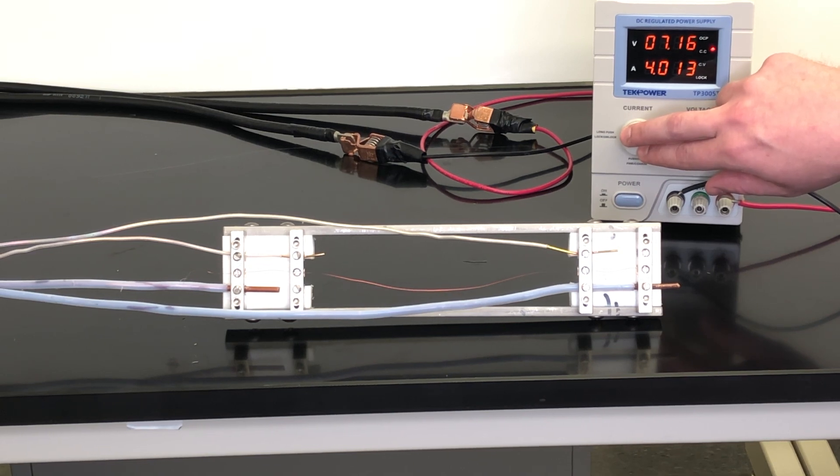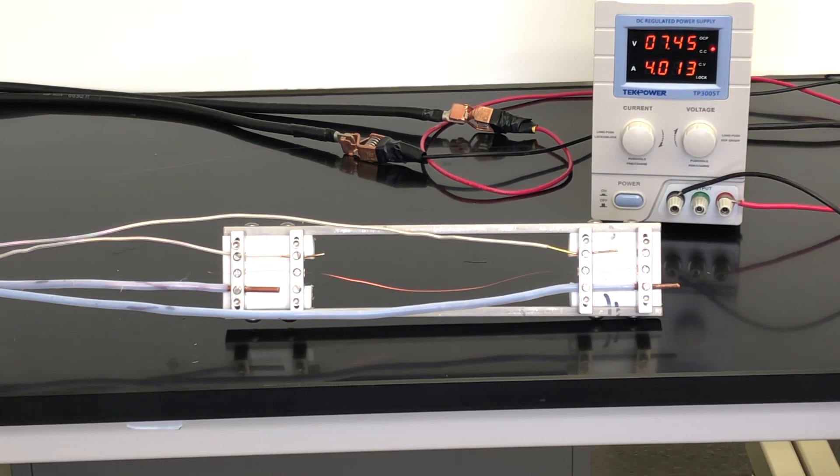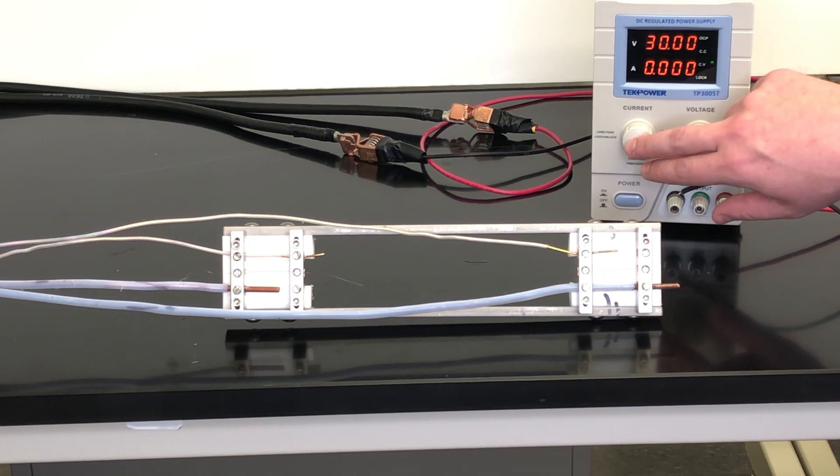This wire sustained a total of about 30% more current than our 500 micron CNT yarn, but again, it was about 50% heavier, so on a per-mass basis, the CNT yarn has slightly better performance.